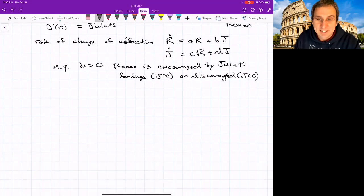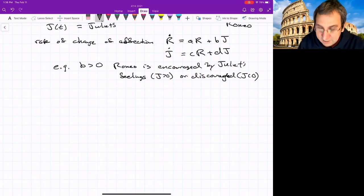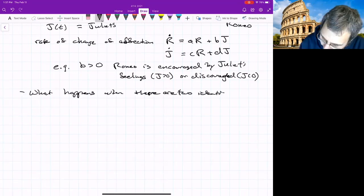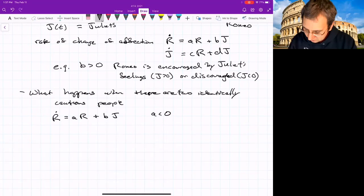In terms of these parameters A, B, C and D, we could talk about personality types. So what happens when two identically cautious people get together? And so we have to find out how we're going to write cautiousness. We'll take A less than zero to mean that's a measure of cautiousness. And then B greater than zero is a measure of responsiveness.